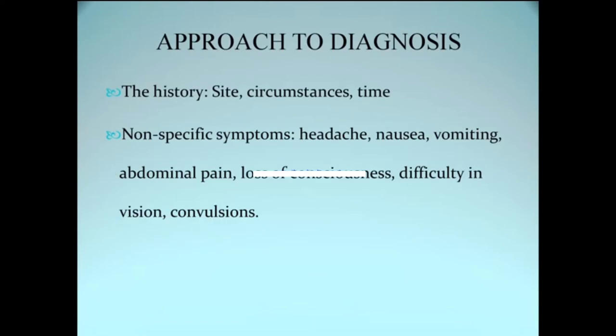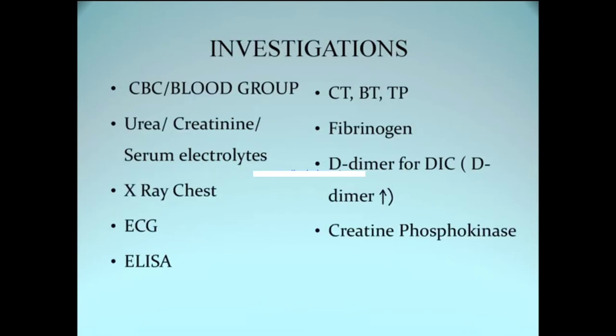How do you diagnose a case of snake bite? The most important thing is the history: where it occurred, how it occurred, the time, the bite marks, and what symptoms the patient developed. Non-specific symptoms such as headache, nausea, vomiting, and abdominal pain suggest the patient is developing systemic signs of toxicity and was bitten by a poisonous snake. You can also order investigations, especially those related to vasculotoxic or viper bites: clotting time, bleeding time, fibrinogen, and D-dimer.